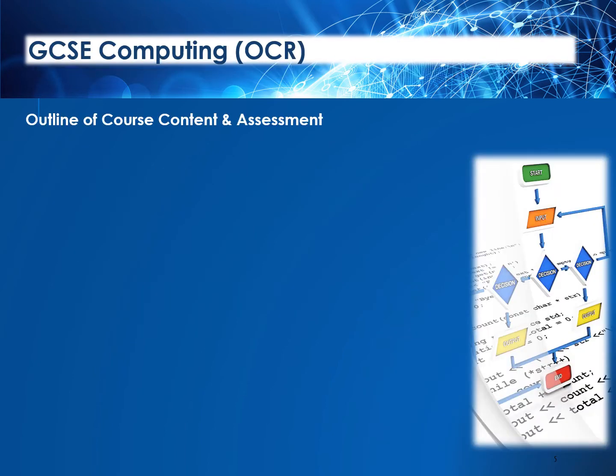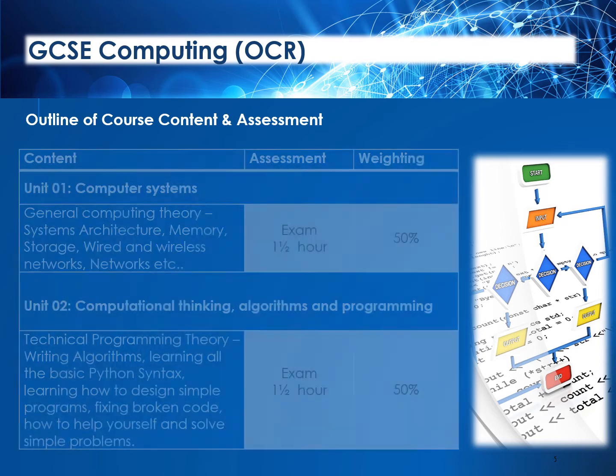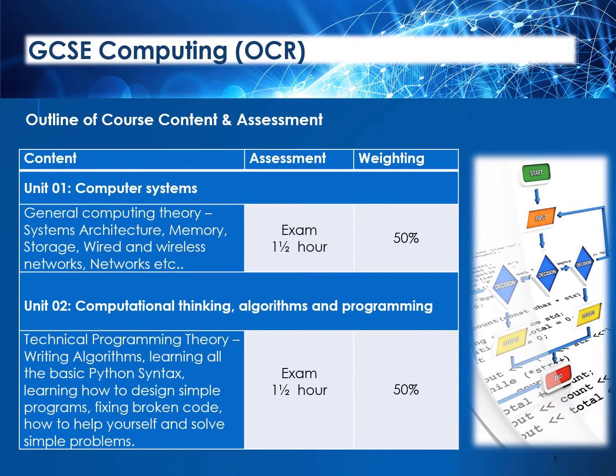The second course we offer is GCSE Computing, which is provided by OCR. As this is an English board exam, pupils will be awarded levels 1 to 9, which is comparable to the grades offered in the Northern Ireland GCSE system. This course has two units which will be studied over the two years.